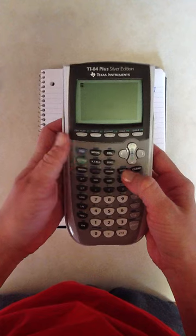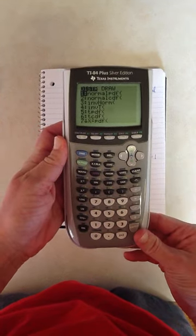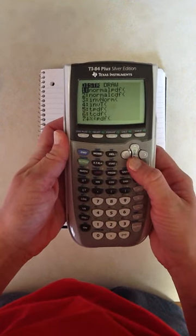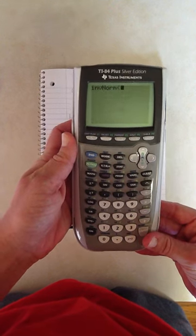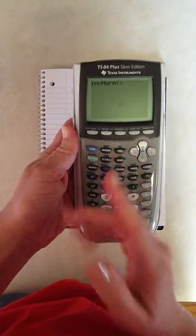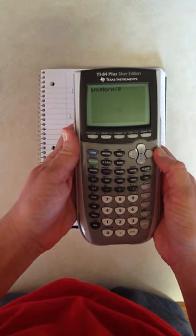So I would hit second, and this VARS key, it's right next to clear. And you should see a screen come up where they give a bunch of different distributions. The one that I'm going to pick is number three, inverse norm. Inverse norm is a function where you would type in three things. Number one, a percent to the left of your location. And then comma, mean, comma, standard deviation.